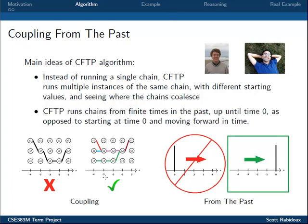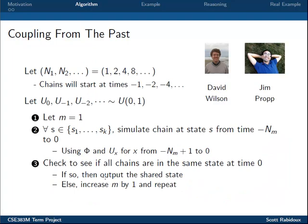The Coupling from the Past algorithm is as follows. Let n1, n2, and so on be an increasing set of integer values — the powers of 2 tend to be a popular choice. The negatives of these n values will be used as starting times for our chains. Next, let u0, u-1, and so on be independently and identically distributed random numbers from a uniform (0,1) distribution. We start by setting m equal to 1, and for each possible state s, simulate a Markov Chain with initial state s, starting at time negative n sub m and stopping at time 0. An important thing to note is that we reuse the same random value to update each of the chains.